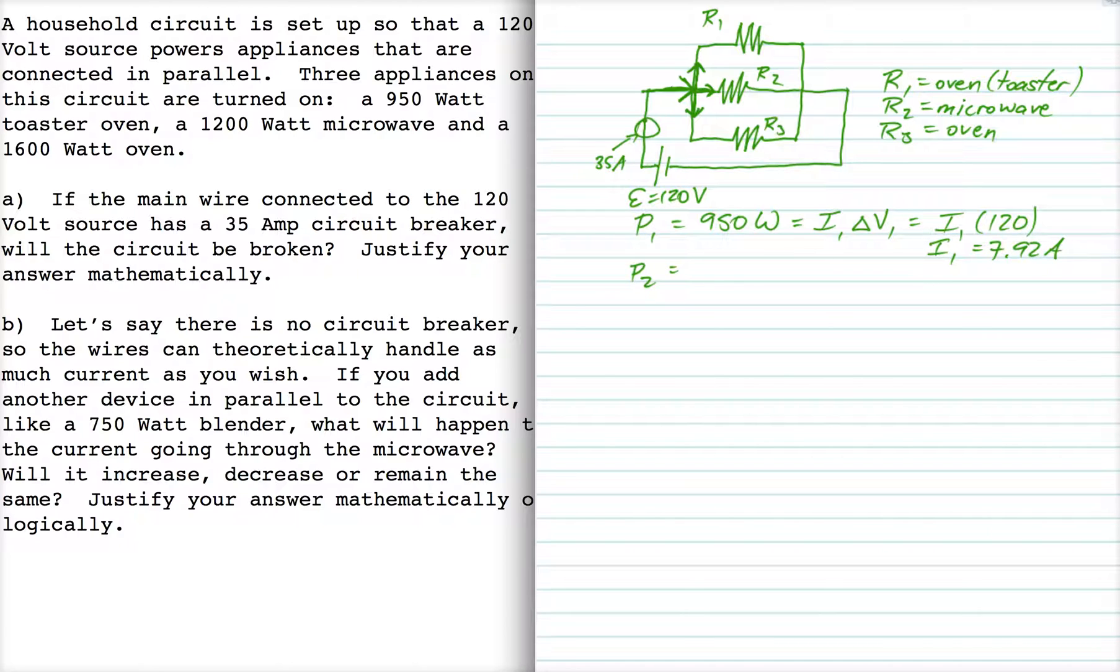For device 2, the microwave, it's 1200 watts, that's equal to I2 delta V2. So I2 times 120, and that means I2 is 10 amps.